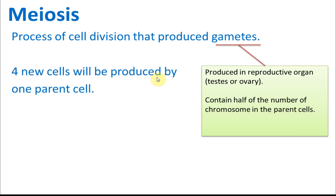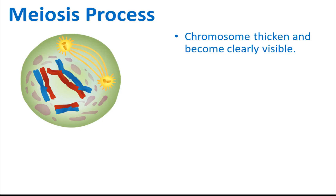During meiosis, four new cells are produced from one parent cell. This is different from mitosis, which produces only two cells. Mitosis is for the cell division of somatic cells, while meiosis is for reproductive cells.